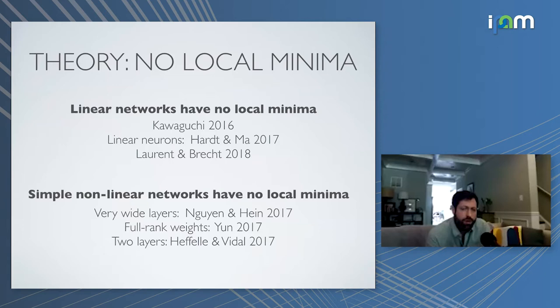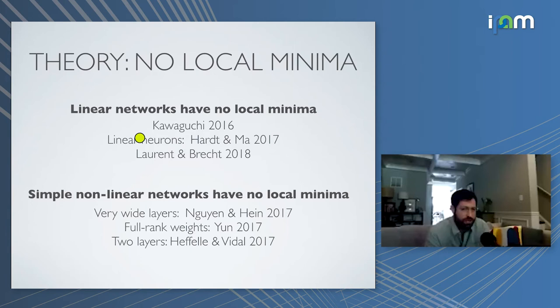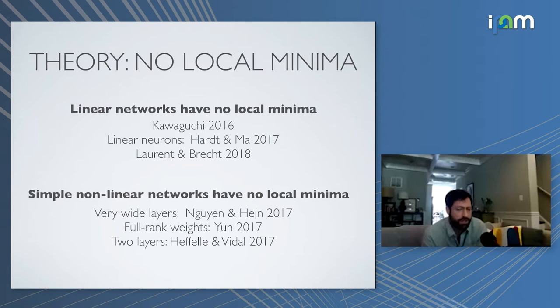There's a lot of theoretical work suggesting there are no local minima — you can always escape those ripples through a wormhole. Various results show no local minima, but they usually make strict assumptions: linear neural nets, very simple non-linear networks like two-layer or very wide networks with ReLUs. While we have theory suggesting no local minima, that theory doesn't always apply to the industrial-strength neural networks and datasets we use in practice. That's why empirical experiments on real networks are valuable.